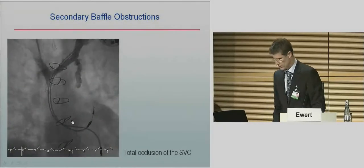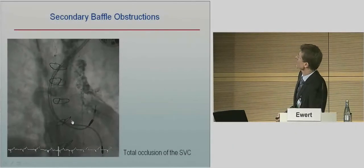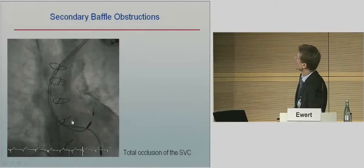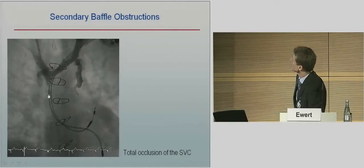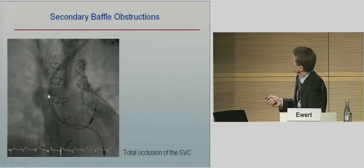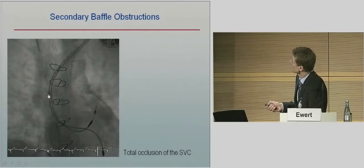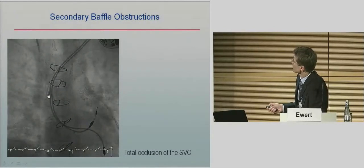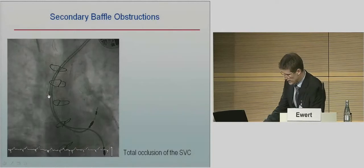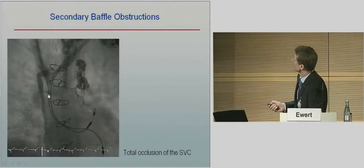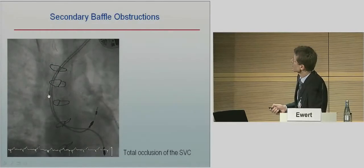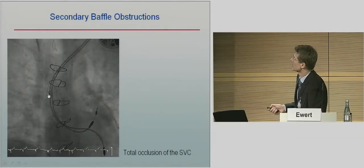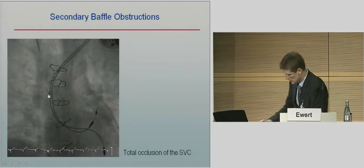This is a total occlusion of the SVC - what I call secondary baffle obstruction. You can see the superior caval vein with some contrast going into the azygos vein and an obstruction very high in the SVC. I believe this is secondary because there was a primary narrowing at this point, and then due to pacemaker leads and their thrombogenic potential, the thrombotic region expanded higher and higher.